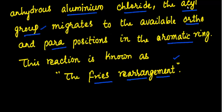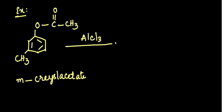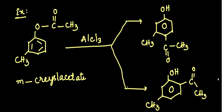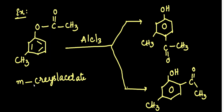Let me explain this rearrangement with an example. Take the aryl ester — metacresyl acetate. This is an ester. When it is treated with anhydrous aluminum chloride (AlCl₃), two types of products will be obtained.